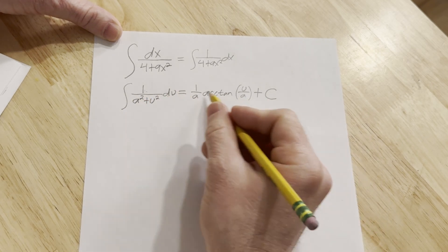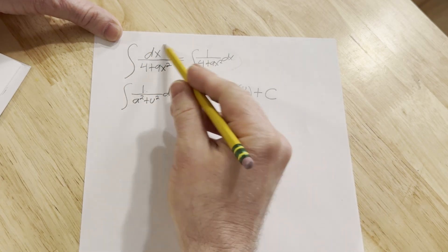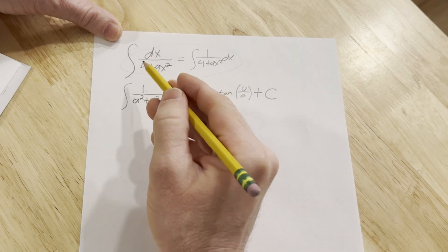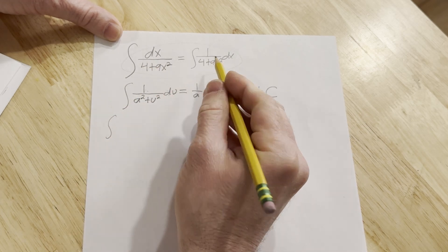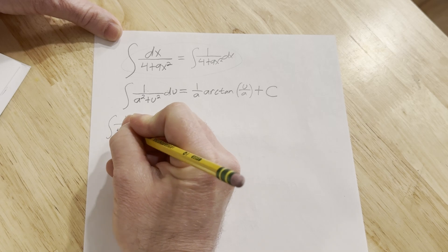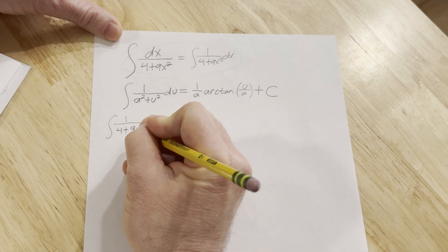So before we apply this formula, we kind of have to rewrite this to make it look like this. So I'm going to write it again. I'm going to start with this one, 1 over 4 plus 9x squared dx.